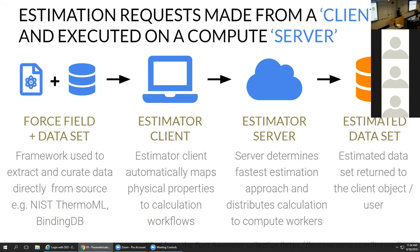Once the client object has turned your property of interest into a workflow graph, it tries to connect to what we call the property estimator server. The property estimator server is just a program that runs on whatever compute resource you've got available — maybe a big GPU cluster. It sends those workflow graphs to the server and waits for results. The server uses a library to take those graphs and execute them across the compute resources, does the calculations, and computes the properties as well as their gradients with respect to the force field parameters. Crucially, the server also starts to store all of the data we're generating — continuously storing uncorrelated configurations generated from any simulations we're running. That's the key to becoming more efficient in the future.